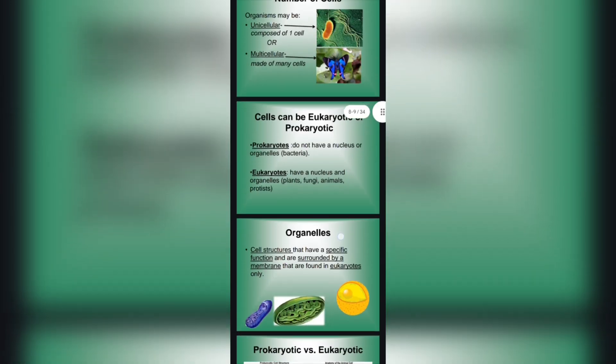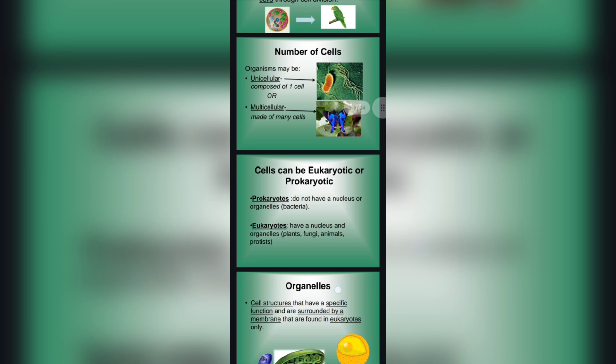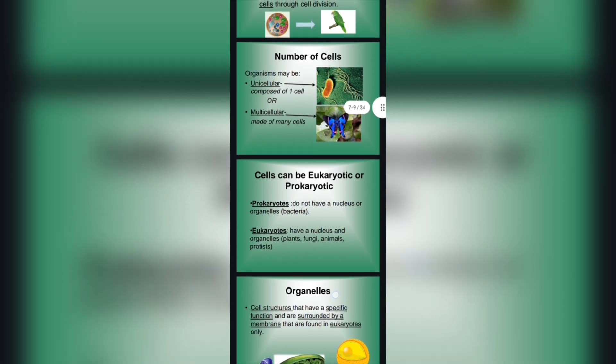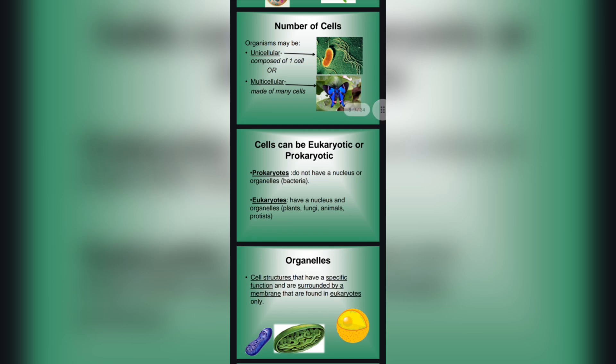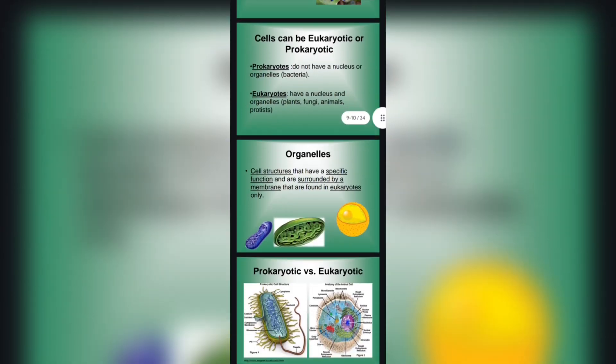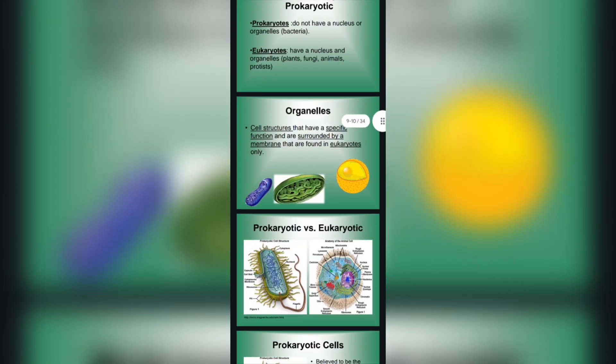Cells can be eukaryotic or prokaryotic. Prokaryotic cells do not have a nucleus — examples are bacteria. Eukaryotic cells have a nucleus — examples include plants, fungi, animals, and protists. Eukaryotic cells have organelles, which are cell structures with specific functions that are surrounded by a membrane.